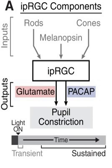Genes also involved with entrainment are PER1 and PER2. Some important structures directly impacted by the light-sleep relationship are the superior colliculus, pre-tectal area, and the ventrolateral pre-optic nucleus.